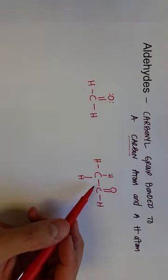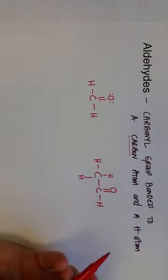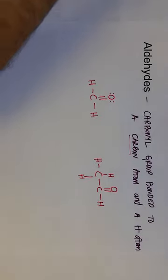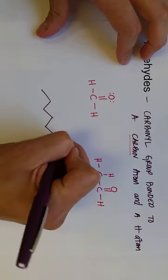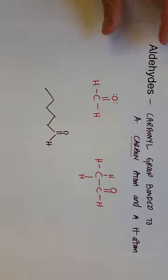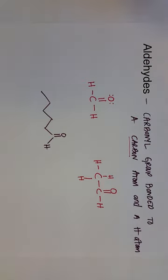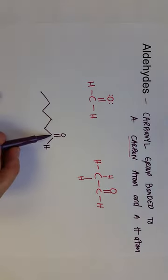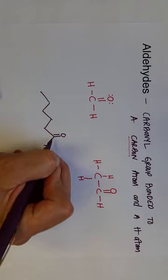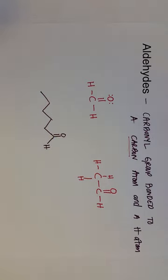The simplest aldehyde with one carbon is methanal, and if we have two carbons where that terminal carbon is bonded to a hydrogen and a carbon, that is ethanal. We can also put these aldehydes on longer molecules and draw them in skeletal structures. Most people do draw the hydrogen on the end just to highlight that this is an aldehyde instead of a ketone or something similar.